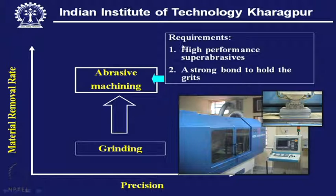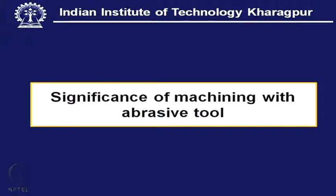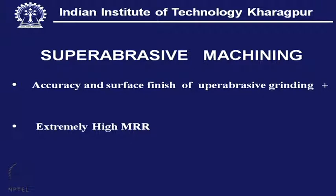High-performance super abrasive means it must have extraordinary wear resistance, high temperature stability, chemical inertness, and adequate toughness. We know already that conventional abrasives — aluminum oxide and silicon carbide — cannot be the best candidates for abrasive machining. So we have to look for a grit material suitable for this purpose.